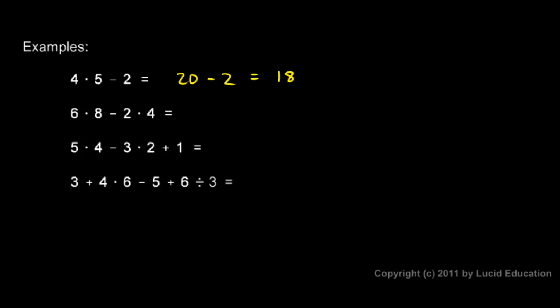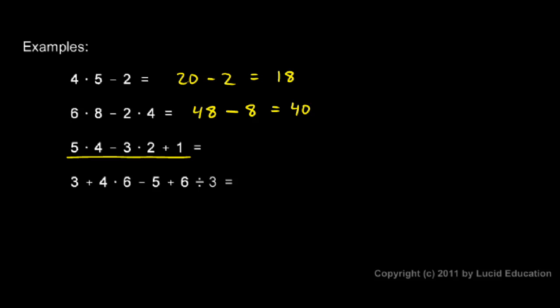Next, 6 times 8 minus 2 times 4. I need to do both multiplications first. This is as if I had parentheses around the 6 times 8 and the 2 times 4, but I don't need those parentheses because I know multiplication gets done before subtraction. So I'll rewrite: instead of 6 times 8, I write 48, then the minus sign, then instead of 2 times 4, I write 8. And 48 minus 8 is 40.